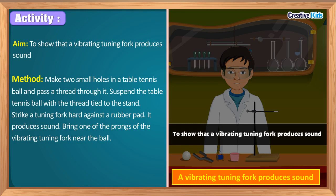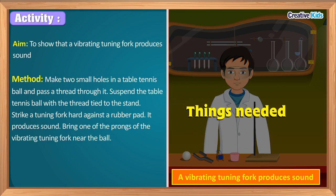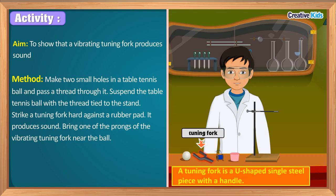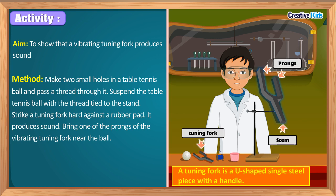We have discussed that sound is produced by vibrations. To prove this further, let us perform one more activity. For this we need a tuning fork. A tuning fork is a U-shaped single steel piece with a handle. It has two arms called prongs and a handle called the stem.